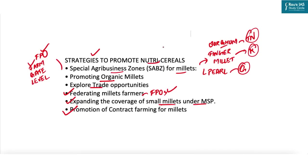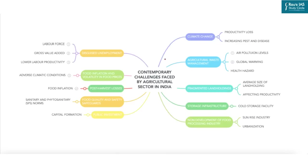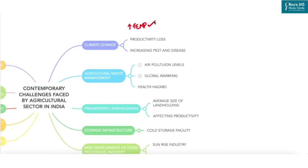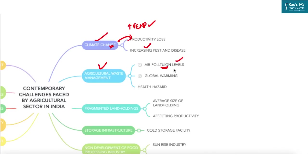Now let's look at contemporary challenges facing India's agriculture sector. First, rising temperatures and increased occurrences of extreme weather events have made climate change a major threat, leading to productivity loss and increased pest and disease attacks, with small and marginal farmers being most vulnerable. Second, agricultural waste management is a challenge — crop residue burning in northern states, such as stubble burning near Delhi-NCR, increases air pollution, worsens the air quality index, contributes to global warming, and creates health hazards.